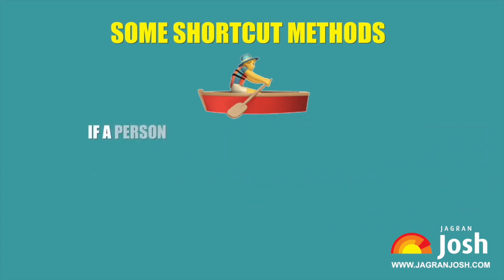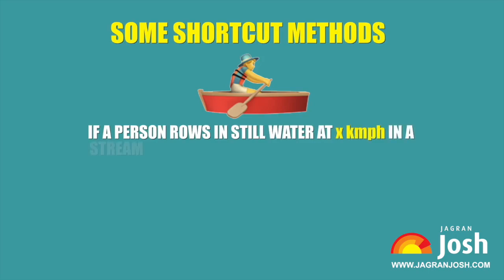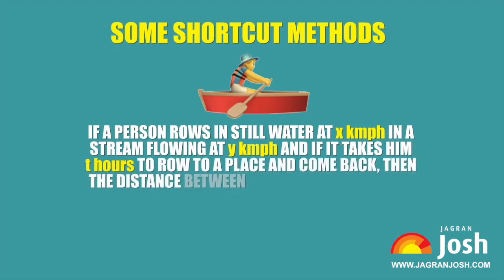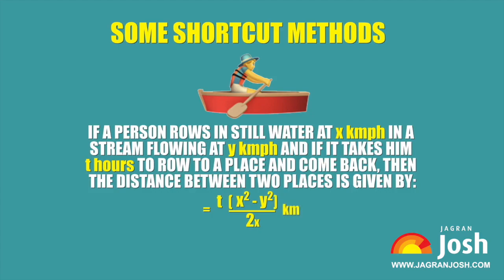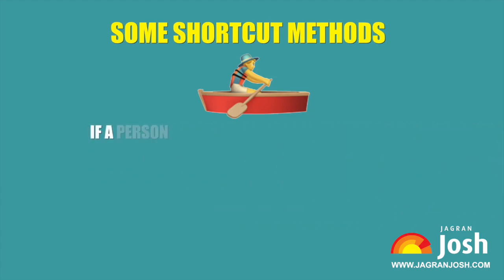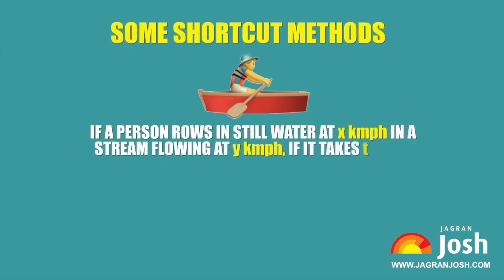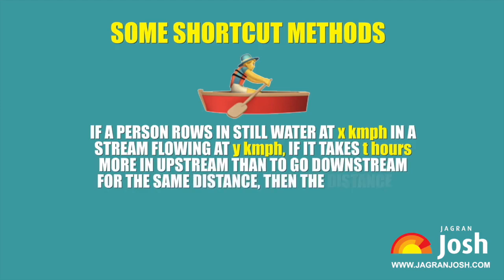Shortcut Method 2: If a person rows in still water at x km per hour in a stream flowing at y km per hour, and it takes T2 hours more to go upstream than to go downstream for the same distance, then the distance is given by a formula based on x, y, and T2.